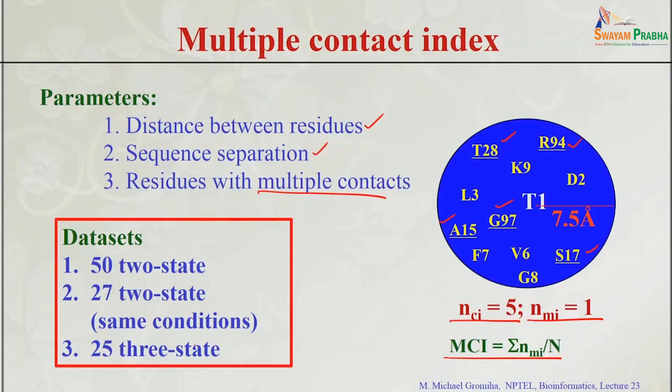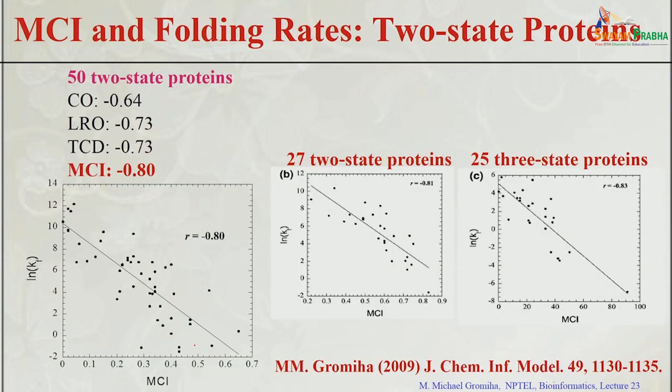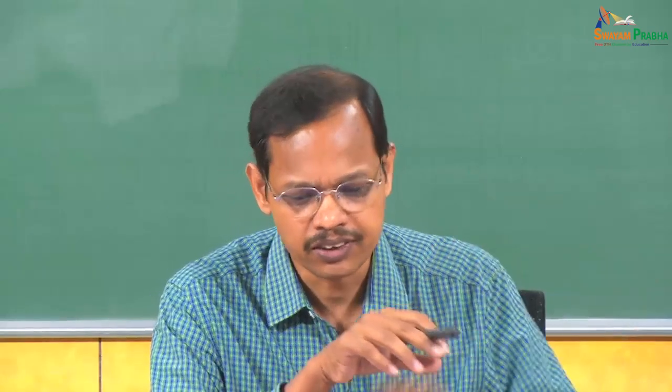We now check whether MCI has any influence on folding rates compared with long-range order and contact order. With different datasets for 2-state and 3-state proteins: for 2-state proteins with 50 proteins, contact order is 0.6, long-range order is 0.73, and MCI is 0.8, because this information enhances the correlation between MCI and folding rates.